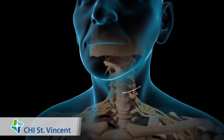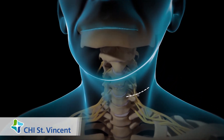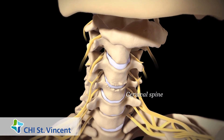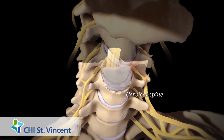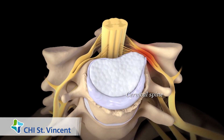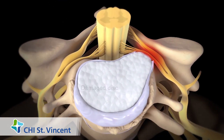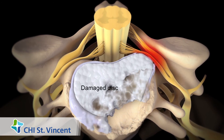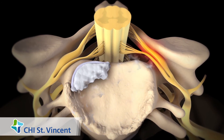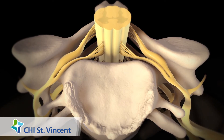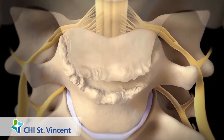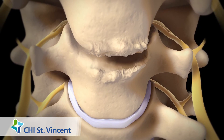Your surgeon will make an incision on your neck. The front of your cervical spine containing the damaged disc will be exposed. Your surgeon will remove the entire damaged disc, which helps relieve the pressure on your spinal cord and nerve roots. Then your surgeon will remove any bone spurs.